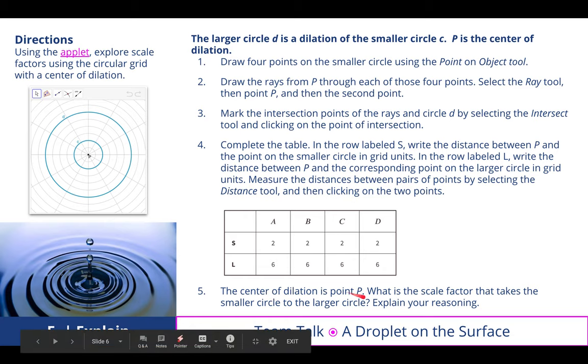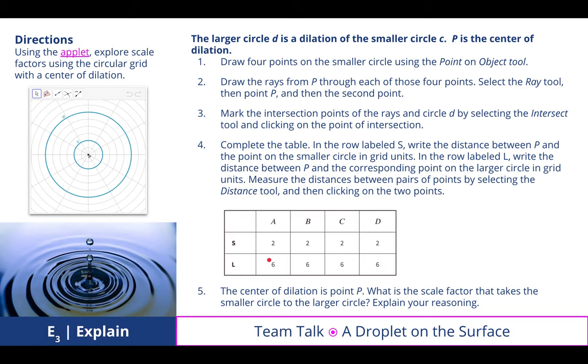The center of dilation is point P. What is the scale factor that takes the smaller circle to the larger circle? We discovered that if we're talking about smaller to larger, we're taking 6 and dividing by 2, which gives us 3. 3 is larger than 1, so it's getting larger. If we did 2 divided by 6, which would give us 1/3, that's less than 1, which would mean I'm going from a larger shape to a dilated smaller shape.